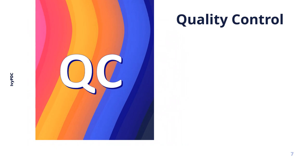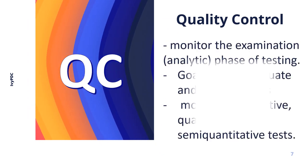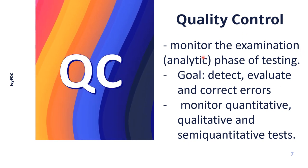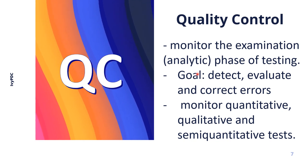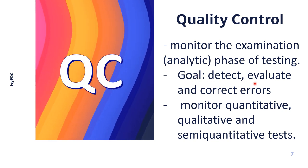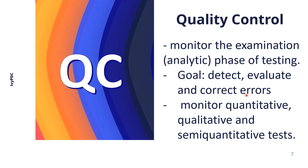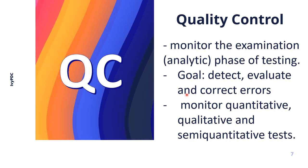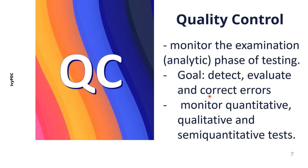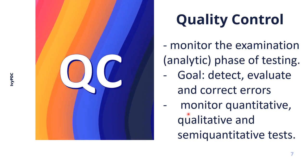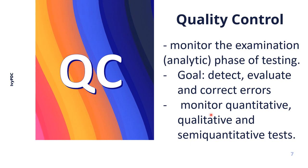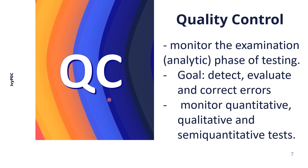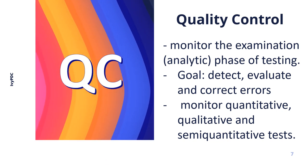Quality control, which is part of the fifth quality essential, is used to monitor the examination phase or analytical phase of testing inside the laboratory. The goal of quality control is to detect, evaluate, and correct errors that may be due to the test system — these will be discussed in the next video about quality control. Different quality control processes are applied to monitor quantitative, qualitative, and semi-quantitative tests.